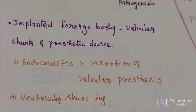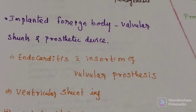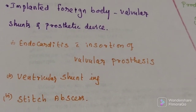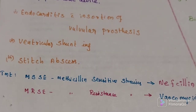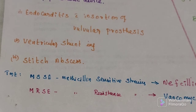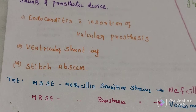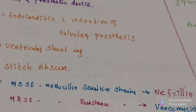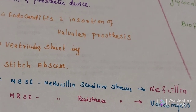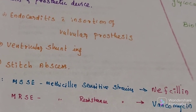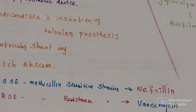It will cause endocarditis, ventricular stent infection, and also result in stitch abscesses. For treatment of coagulase-negative Staphylococcus epidermidis: methicillin-sensitive strains are treated with nafcillin, while methicillin-resistant strains are treated with vancomycin.